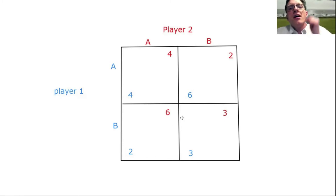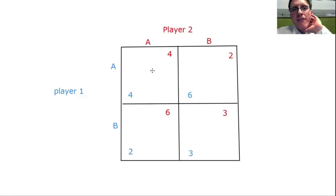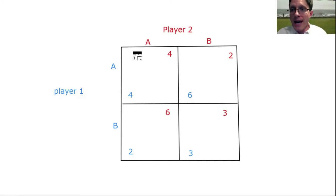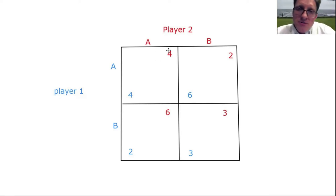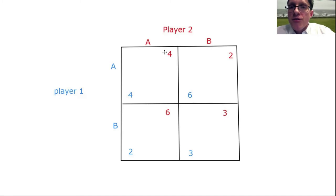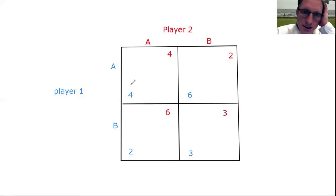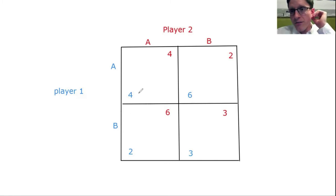We've ruled out these two boxes. Looking at another box, player B would want to change their strategy, so that's not a Nash equilibrium either. However, the upper box where both players choose strategy A is in fact a Nash equilibrium. If they're both choosing strategy A and player two were to deviate, their payoff would change from four to two. And if player one were to change from A to B, their payoff would also decline from four to two. So both players would lower their payoffs by changing their strategy — hence, this is a Nash equilibrium.